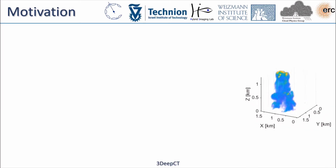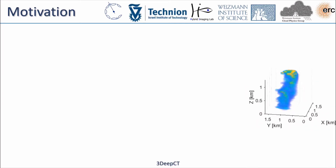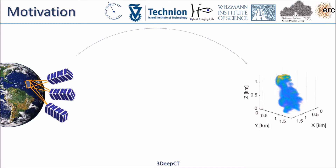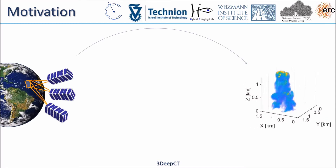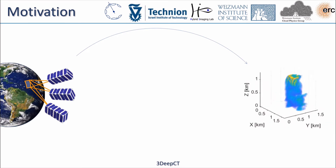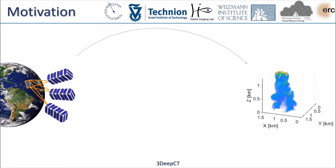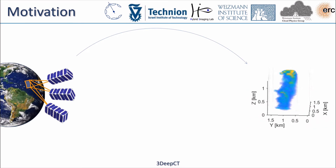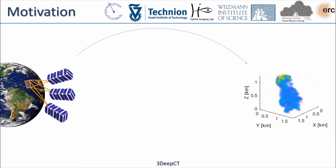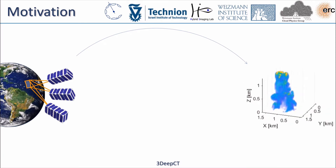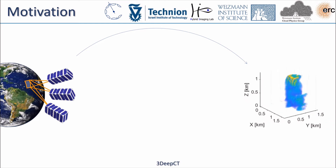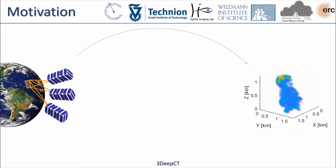Radiation that propagates through the atmosphere yields a set of multi-view 2D radiometric images. From these images we retrieve a volumetric spatial distribution of liquid water content in 3D. Reconstruction of such objects poses a serious challenge, which is worth overcoming by deep neural networks.